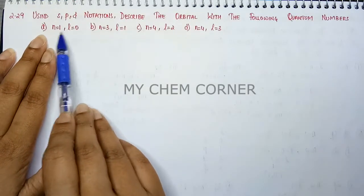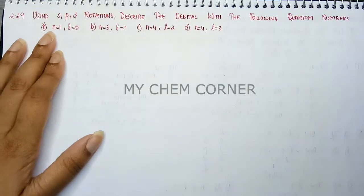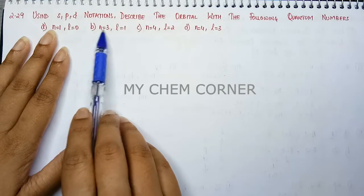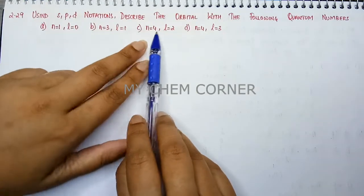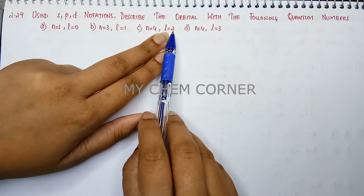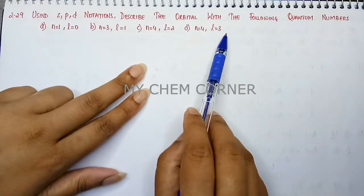In the first one we have n is equal to 1, l is equal to 0. Second one we have n is equal to 3, l is equal to 1. Third one we have n is equal to 4, l is equal to 2. Fourth one is n is equal to 4, l is equal to 3.